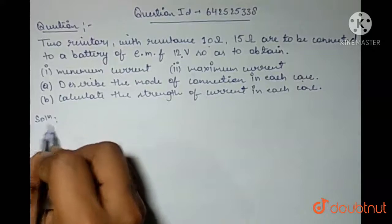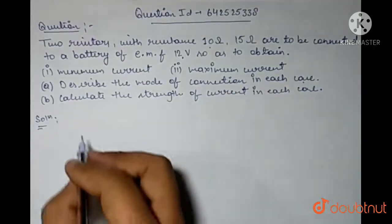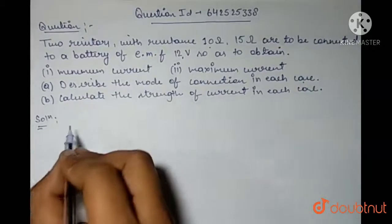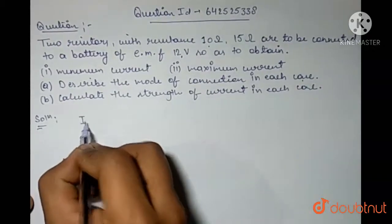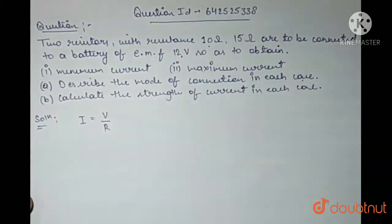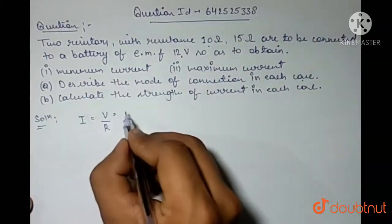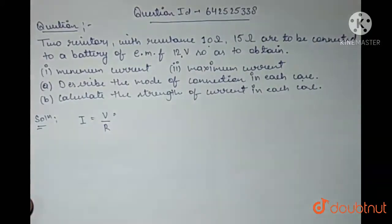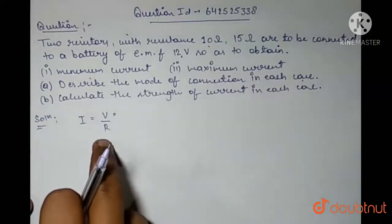As we know according to Ohm's law, the current I is equal to voltage upon the R. But in this case, the voltage is fixed. So, for varying the current or for getting a minimum or maximum current, I should only change the resistance.